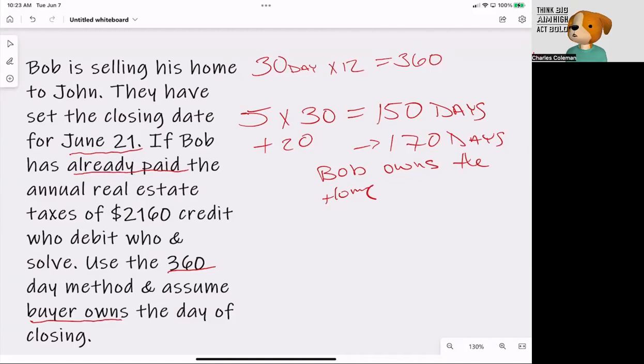The second thing that we're going to need to do is we're going to figure out how much each day is worth on this $2,160. So what I'm going to figure out is I'm going to take $2,160 and I'm going to divide that by a 360-day calendar, which tells me that each day in taxes is worth $6. Perfect.